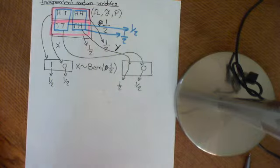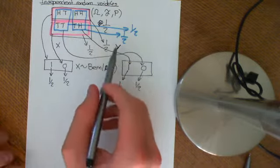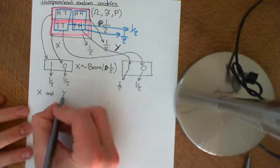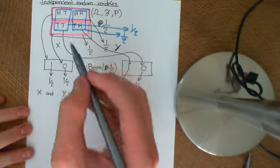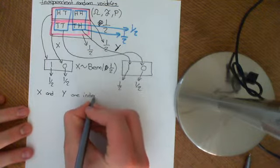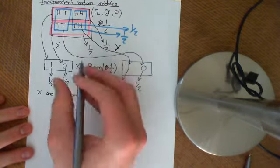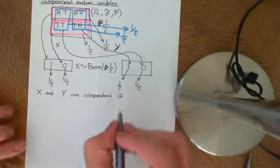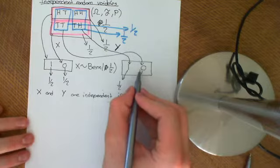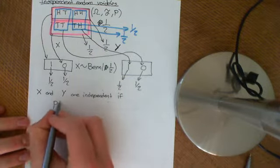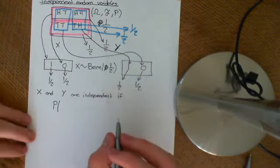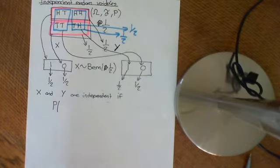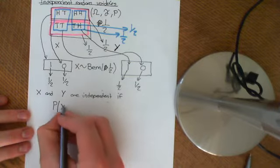Now I want to show you the concept of independent random variables — specifically that these two random variables X and Y are independent. X and Y, which are random variables defined on the same probability space, are independent if the probability of getting any outcome satisfies a particular condition. To generalise it to more arbitrary probability spaces rather than ones where you've just got 0 and 1: they are independent if the probability that X equals some value A...